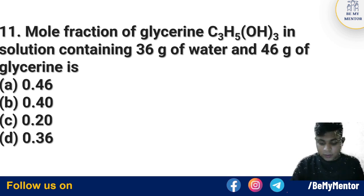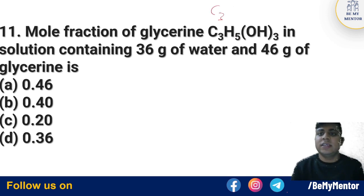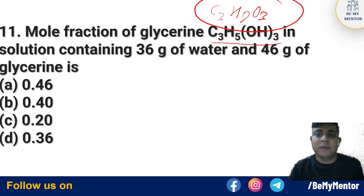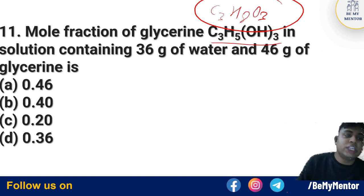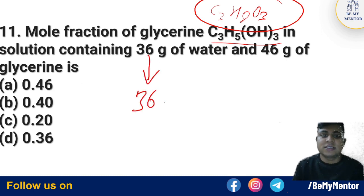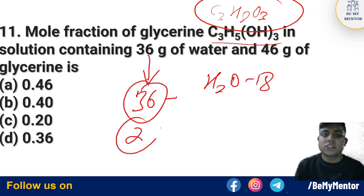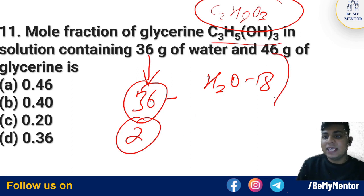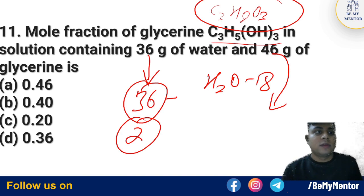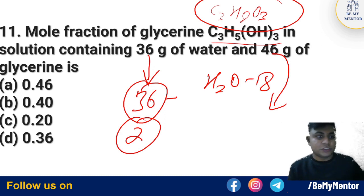Question number 12: The formula for glycerine is C3H8O3. Find the mole fraction of glycerine in a solution containing 36 grams of water. The molecular mass of water (H2O) is 18, so 36 grams of water gives 2 moles of water. Taking the ratio with glycerine's moles, the mole fraction of glycerine is 0.2. The answer is option C — 0.2.